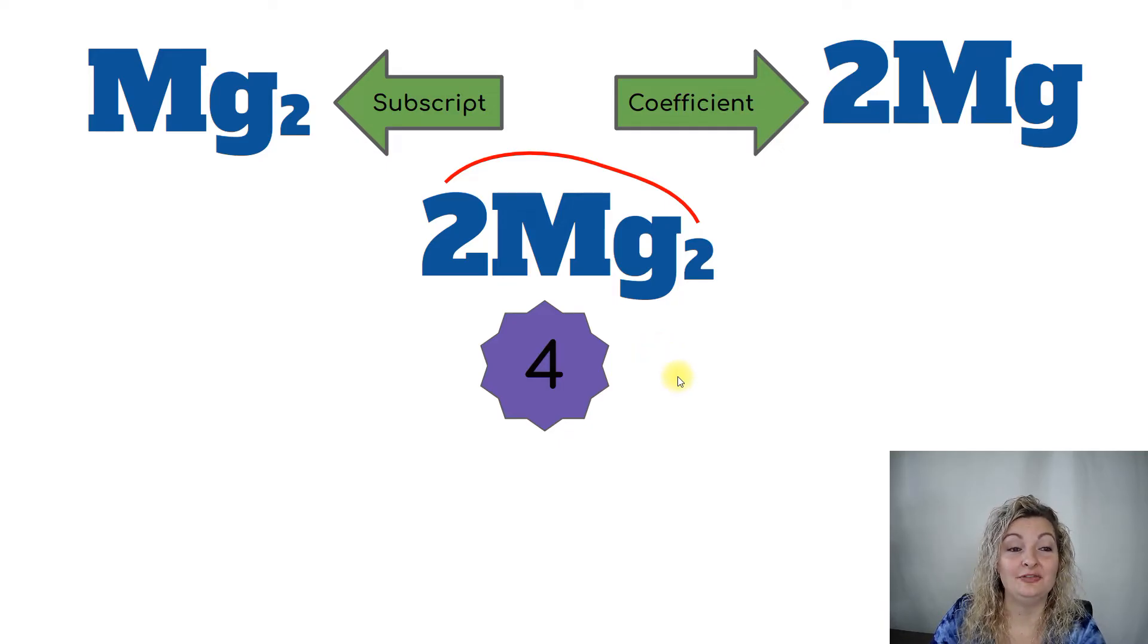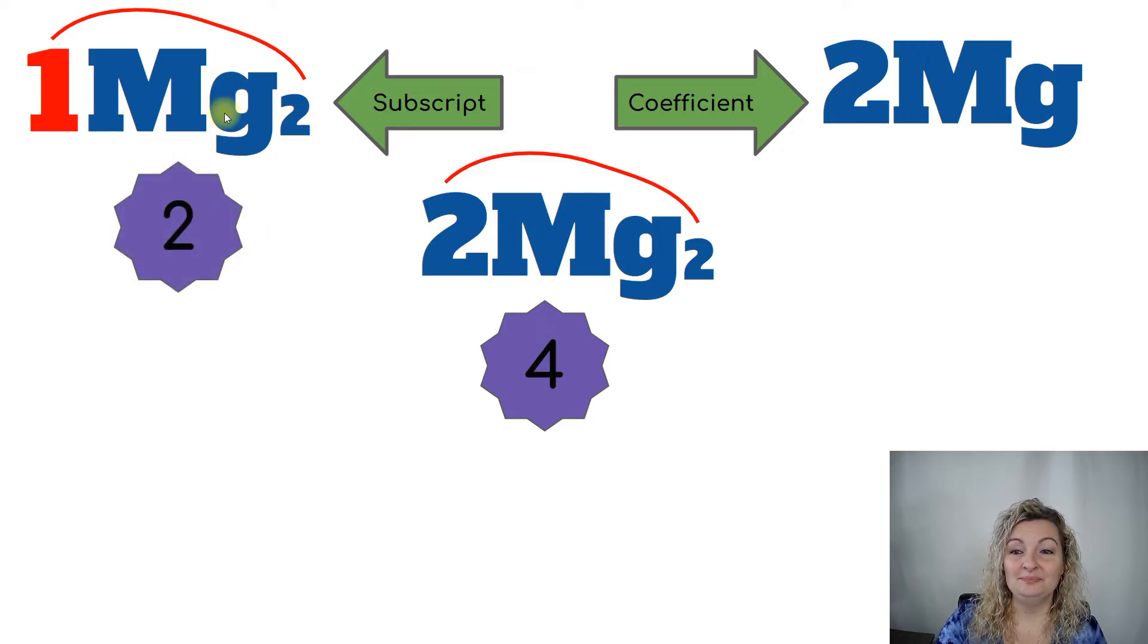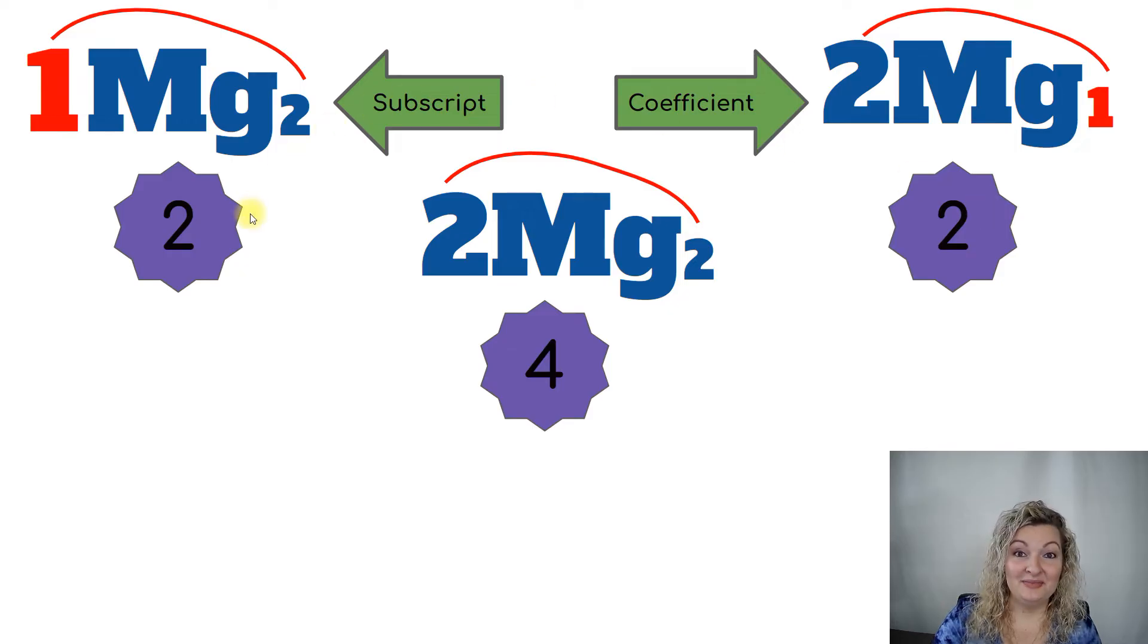So let's go up to the top and see how we did this to figure out that these both have 2. If I go ahead and I had an understood 1, it was blank, but it's really an understood 1, just like in math class. We're going to use our distributive property. So 1 times that subscript of 2 gives us 2 atoms of magnesium. Over here, we have a subscript that is not written, which means it's an understood 1 as well. So 2 times 1 is going to give us 2 atoms of magnesium. So that's how they are both the same.